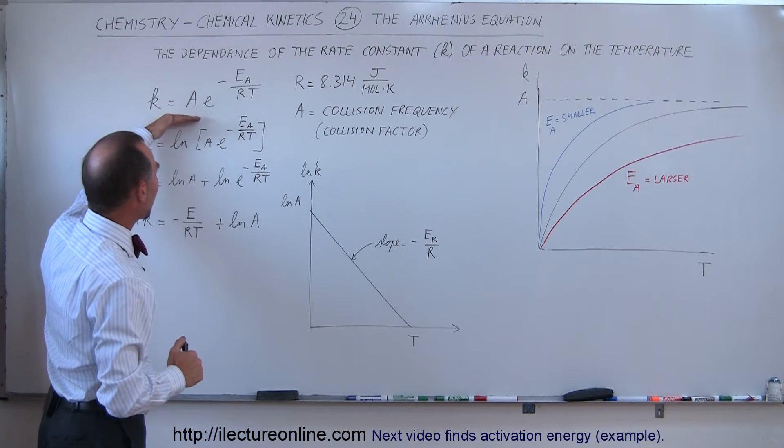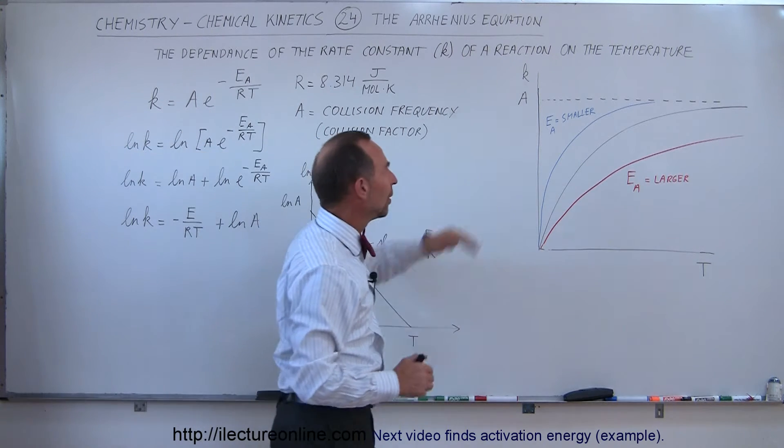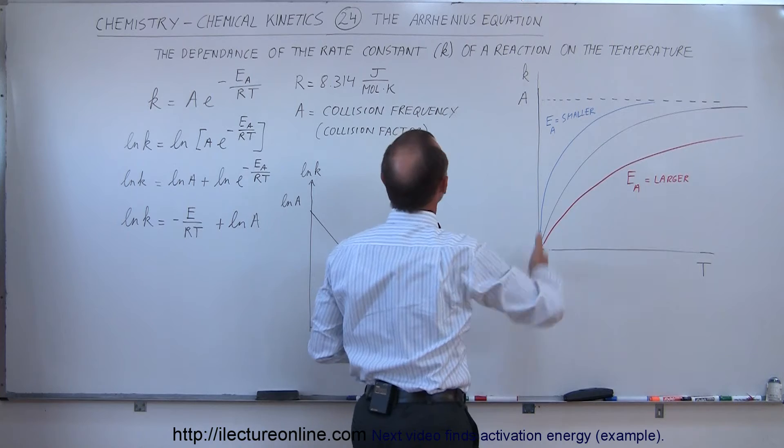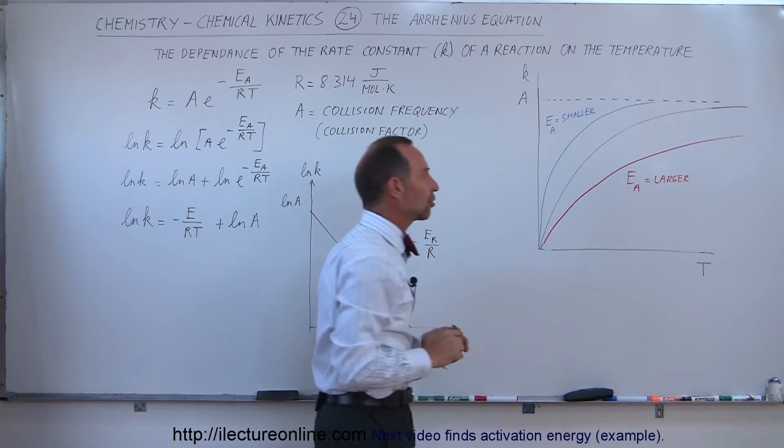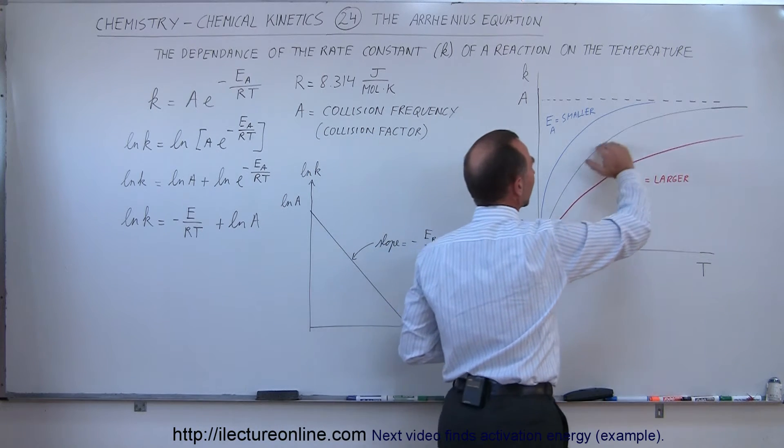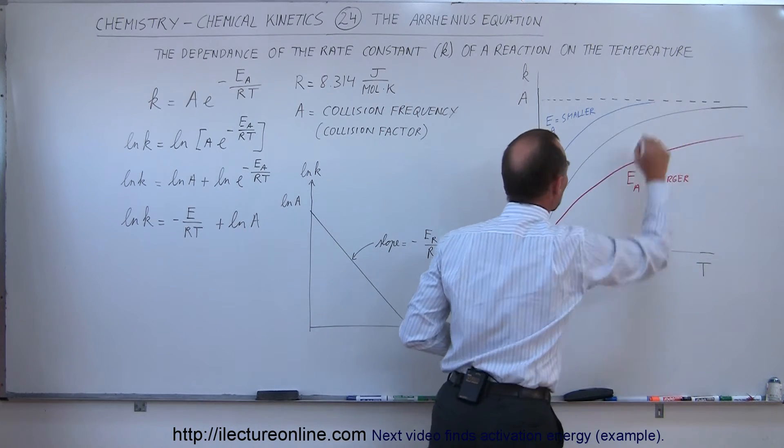So what I did was I graphed this equation right here to the right, where on the vertical axis we have the rate constant, on the horizontal axis we have the temperature. And notice that the relationship runs like this.